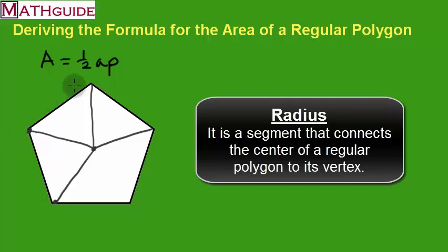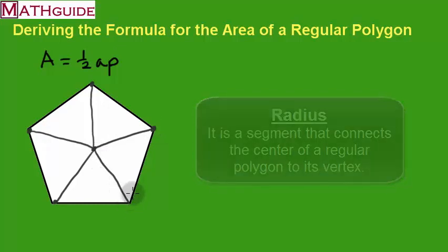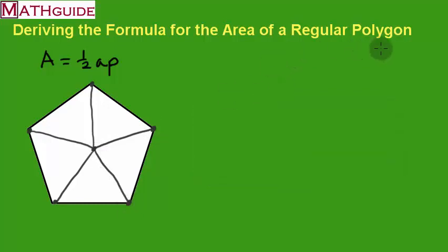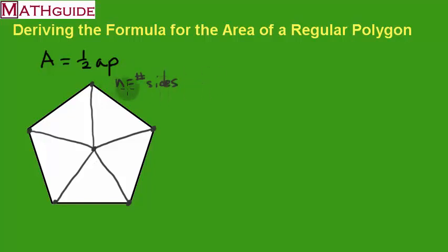I'm going to put these radii so they intersect with all the vertices. We know we're dealing with a regular polygon. This is a pentagon, and it has five sides. But in general, when dealing with a regular polygon, we don't know how many sides there are, so I'm going to say there are n sides, where n is the number of sides. In this case, n equals five.